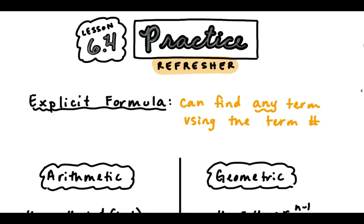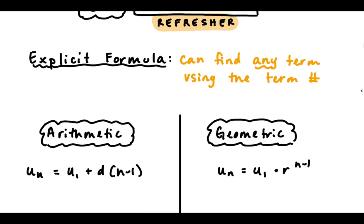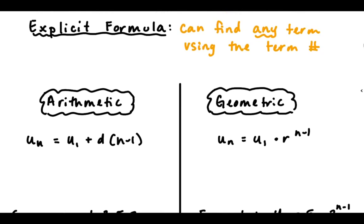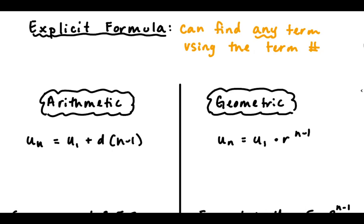So it's a rule for finding any term in the sequence using its term number. We came up with an explicit formula for arithmetic sequences and an explicit formula for geometric sequences. Here's what they look like.